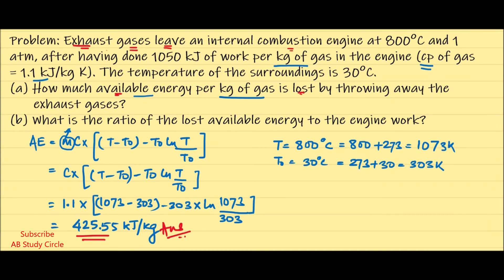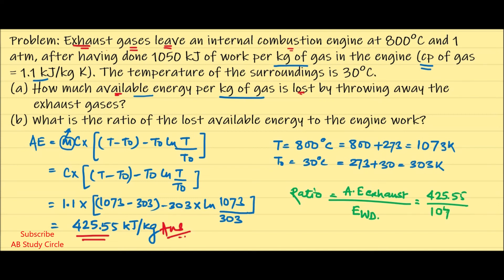Now let us find out the ratio for the second part. The ratio is: available energy of exhaust divided by engine work done = 425.55 / 1050 = 0.405. This is the answer for the second part. Hope you understand this question well, and if you find this video useful, like this video and share it with your friends.